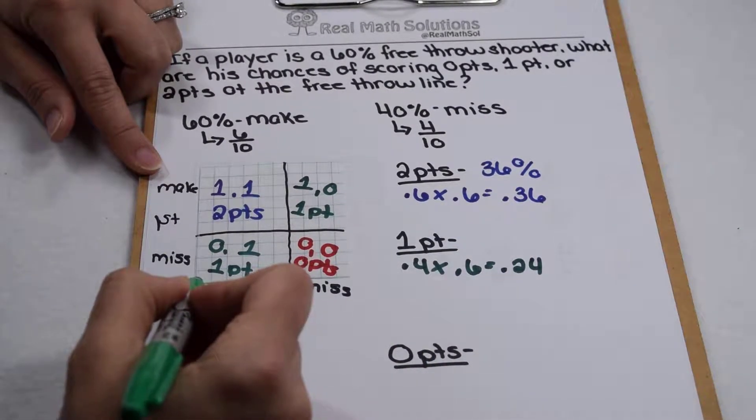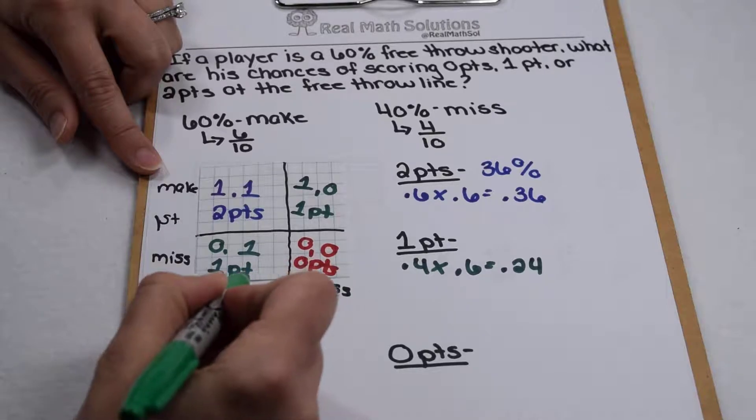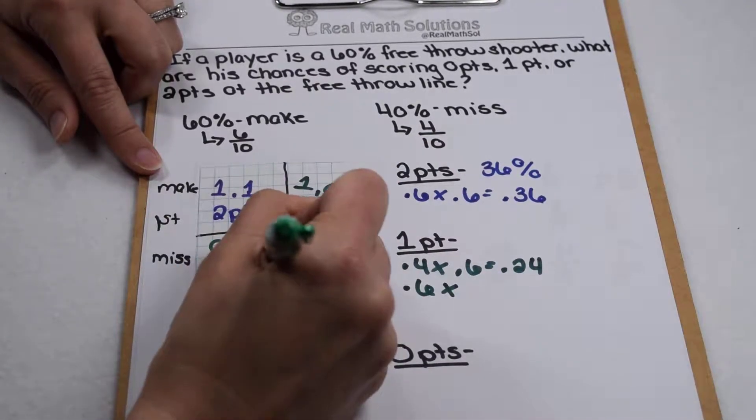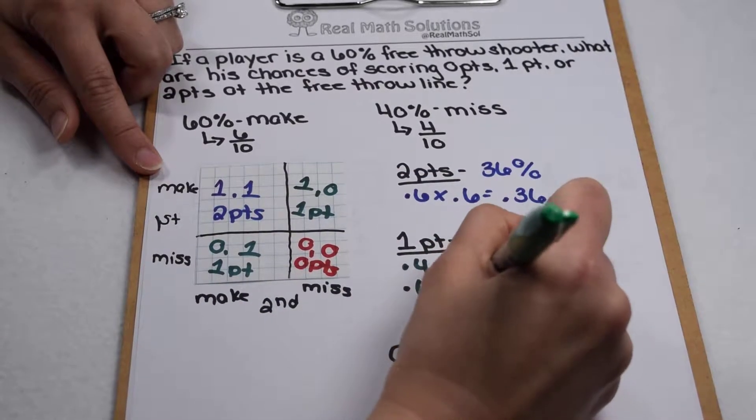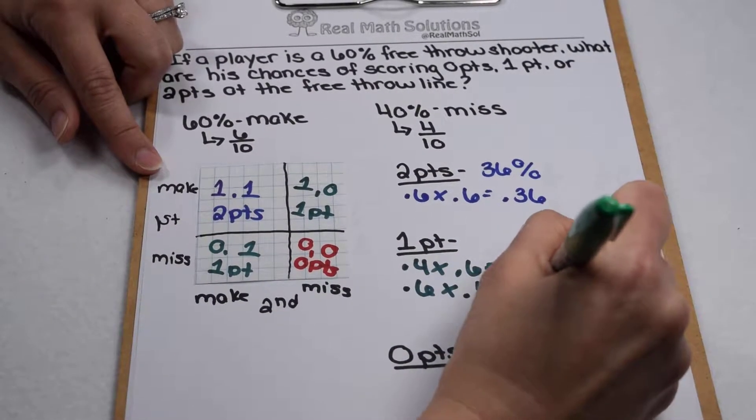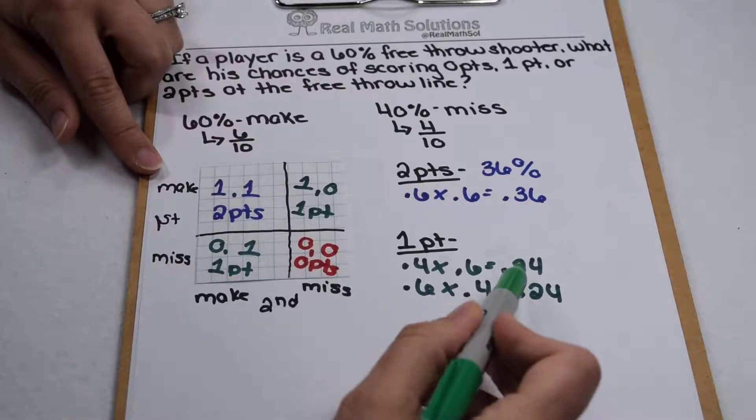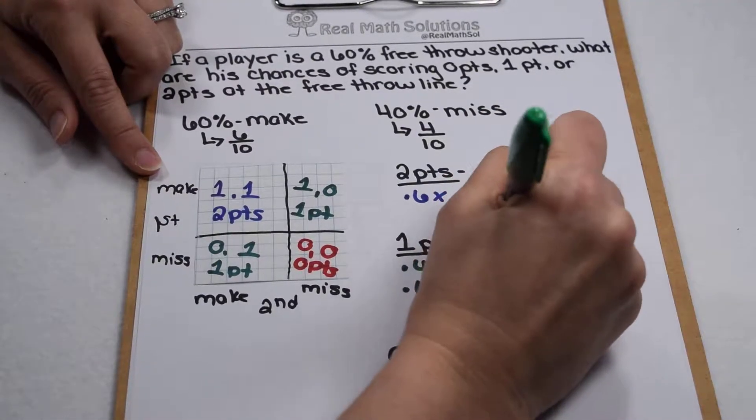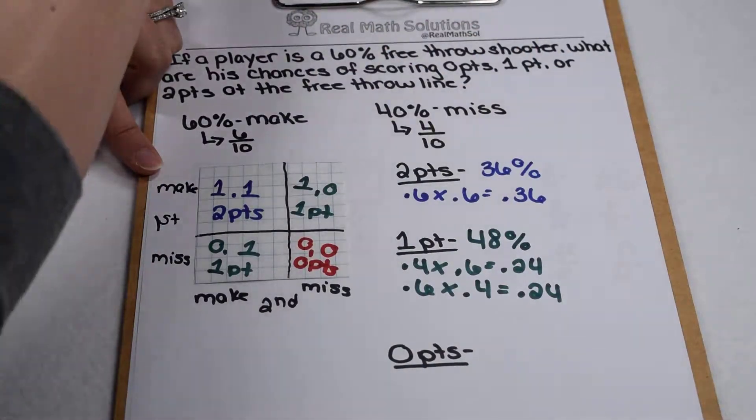But I also have this box down here, which is 6 tenths by 4 tenths for another 24 hundredths. 24 and 24 together is 48 hundredths. So that would be equivalent to a 48% chance of scoring 1 point.